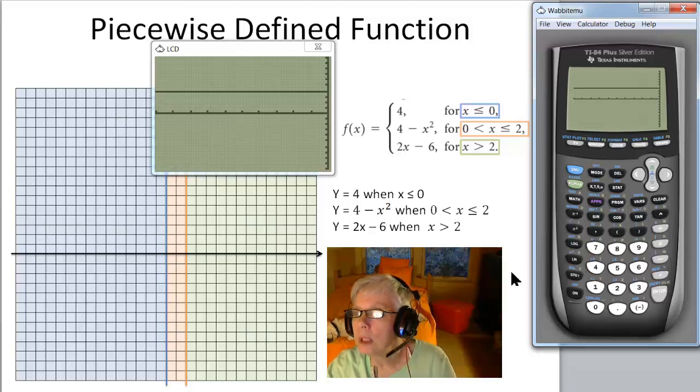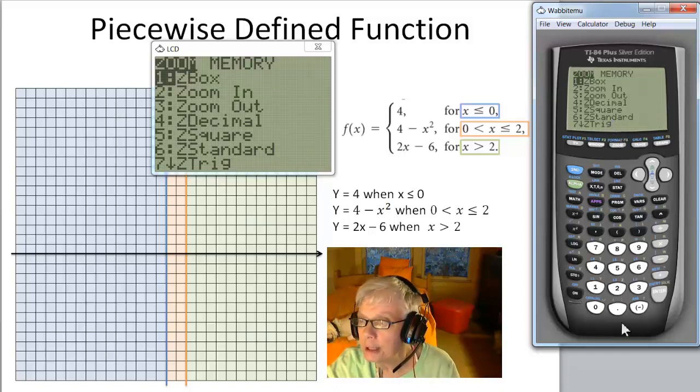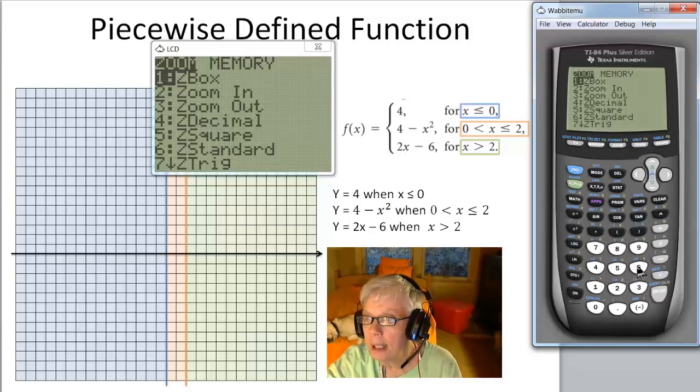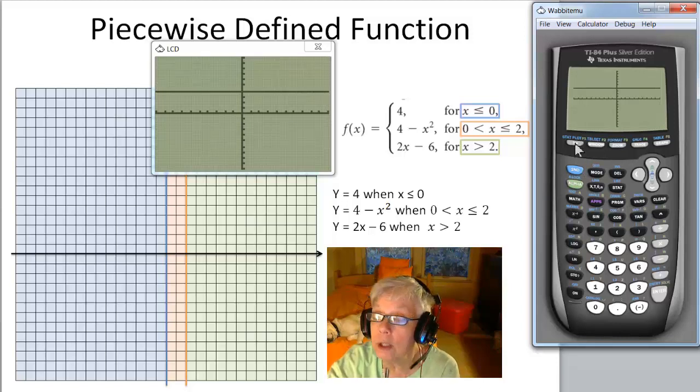Now, let us go back to the normal settings, which is z6, standard. I hit zoom, and now I hit 6, and there's y equals 4, but it's about to disappear.